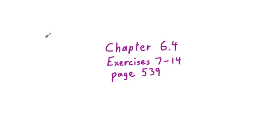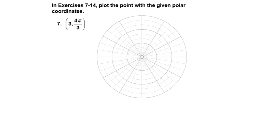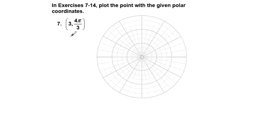Chapter 6.4 exercises 7 through 14. This section has to do with polar coordinates. We're going to plot the point with the given polar coordinates for the odd-numbered problems: 7, 9, 11, and 13.